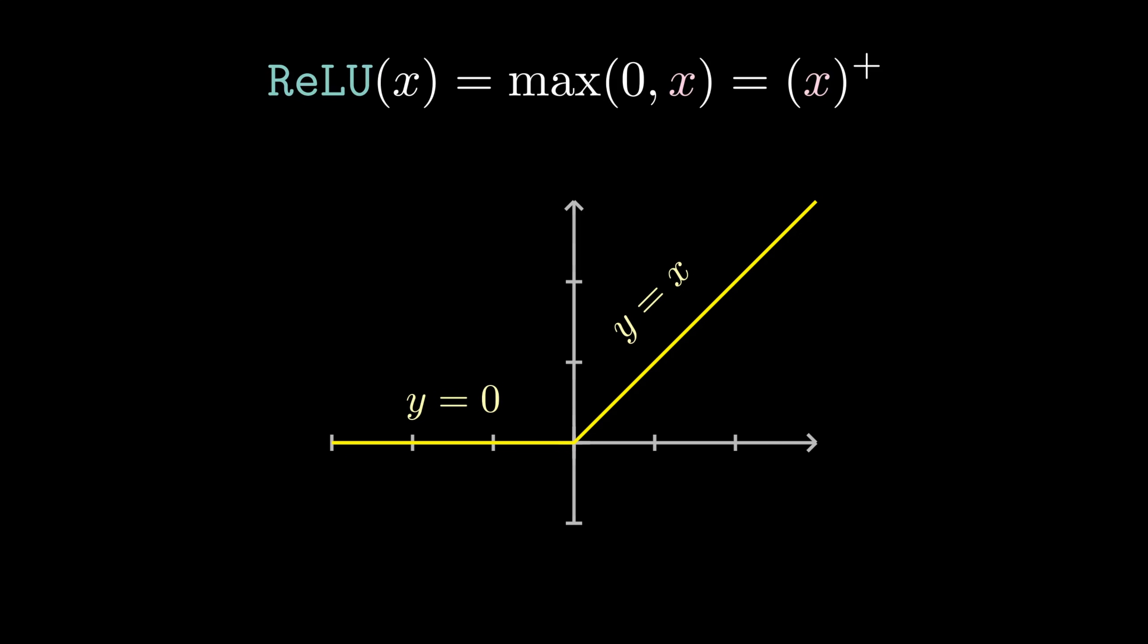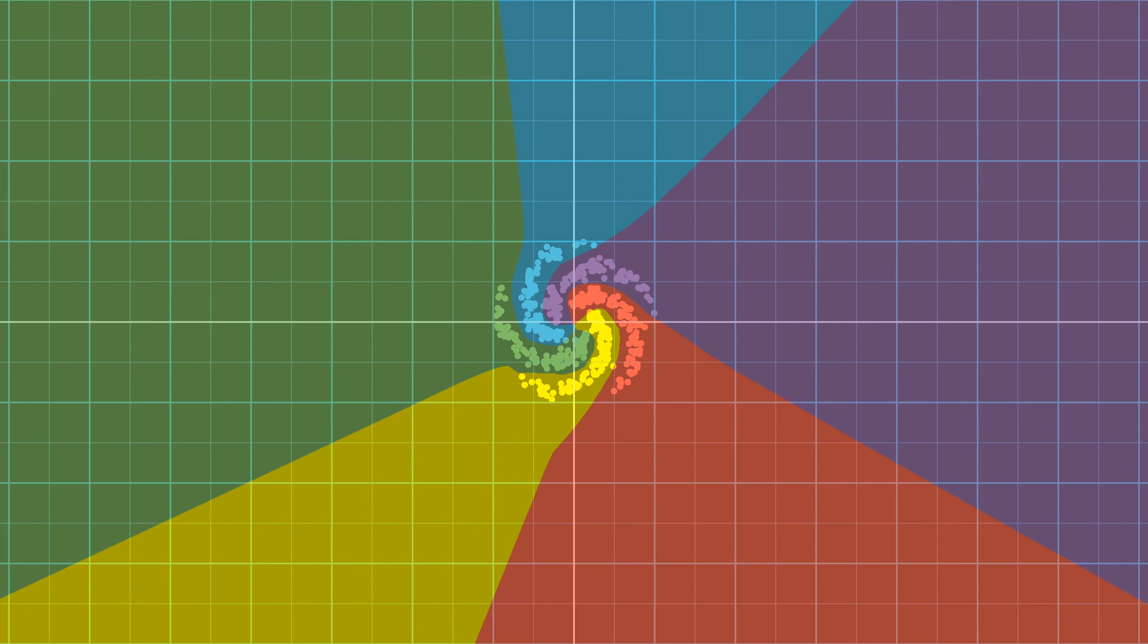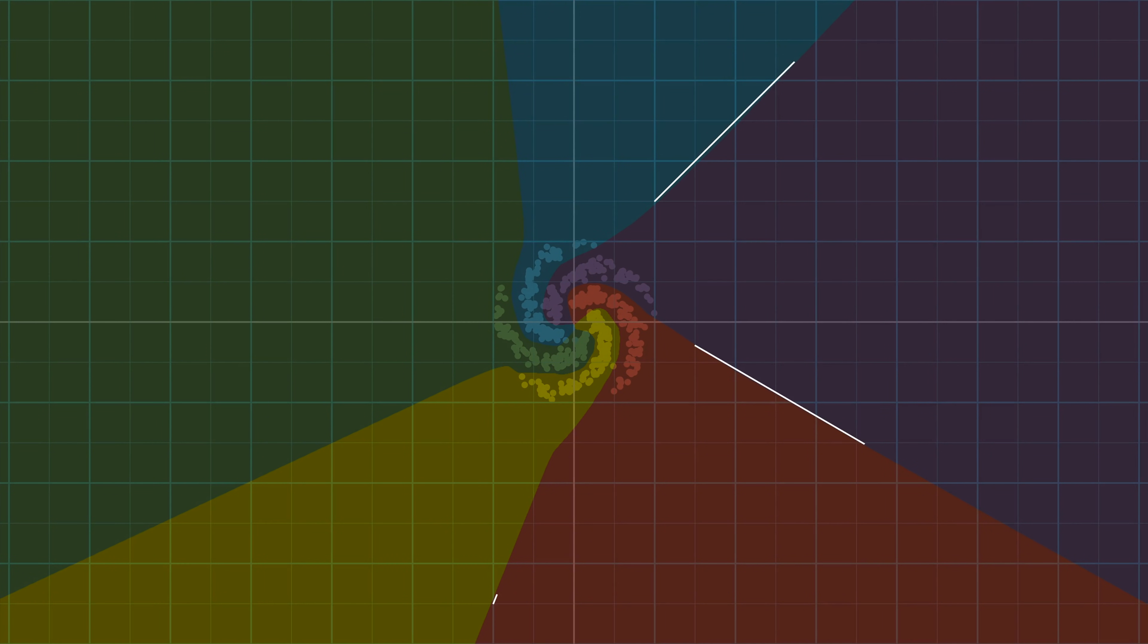Given that we're using ReLU for the hidden layers, the neural network will linearly extend these decision boundaries.